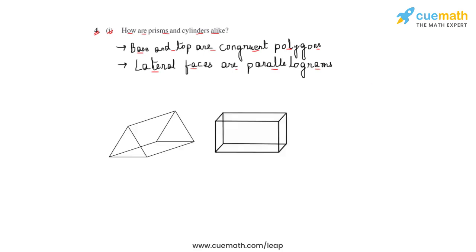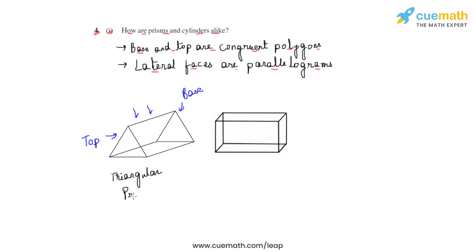Let us observe a few prisms as we see in this set of figures. If we consider this part to be the top and this to be the base of this solid, we observe that these two are congruent polygons, basically triangular in shape. Also, the lateral faces here are parallelograms. Hence we can state that this triangular prism, where both the top and the base faces are triangular, is a polyhedron and is a prism.